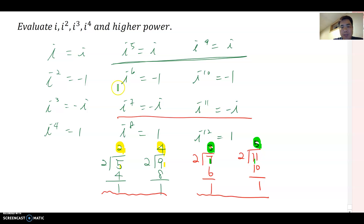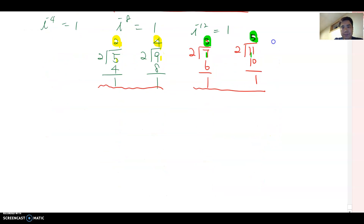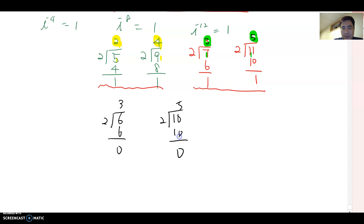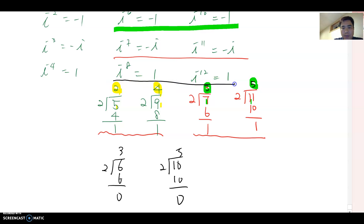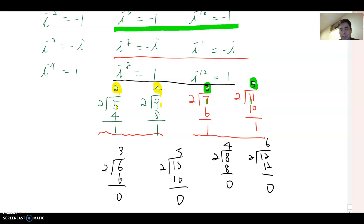Now let's think about the even-power cases — i to the sixth, eighth, tenth, and twelfth. Six divided by two is three with no remainder. Ten divided by two is five with no remainder. Eight divided by two is four with no remainder. Twelve divided by two is six with no remainder. We can apply the same property: if there is no remainder and the quotient is odd, the answer becomes negative one. If there is no remainder and the quotient is even, the answer becomes one.